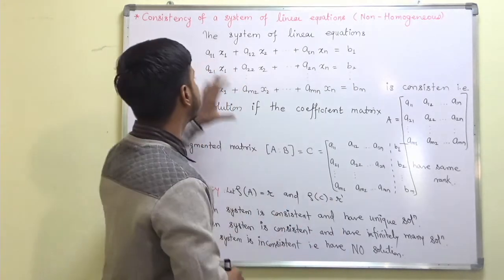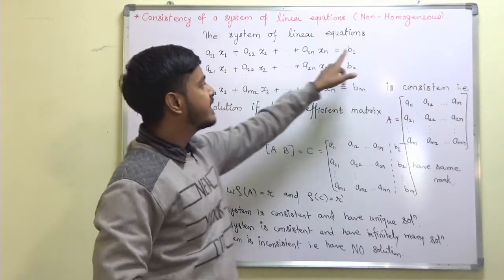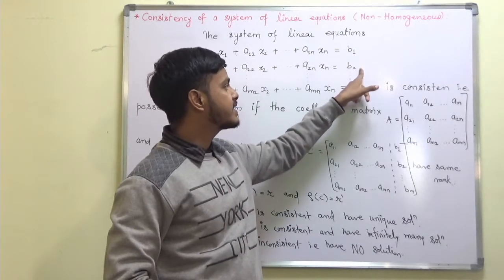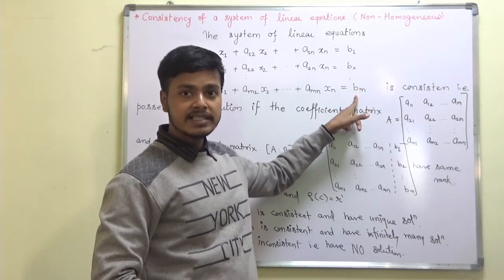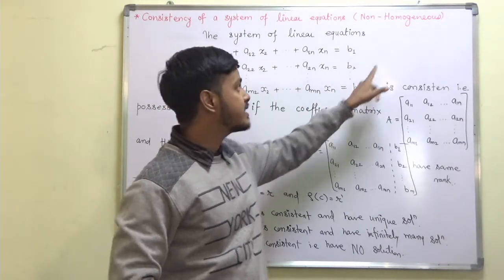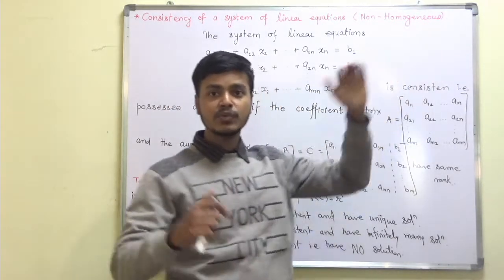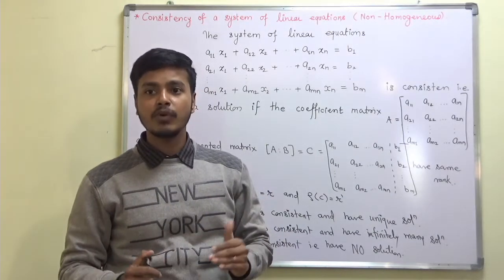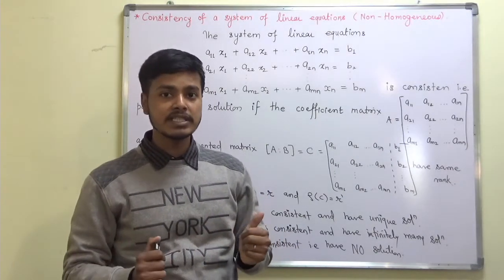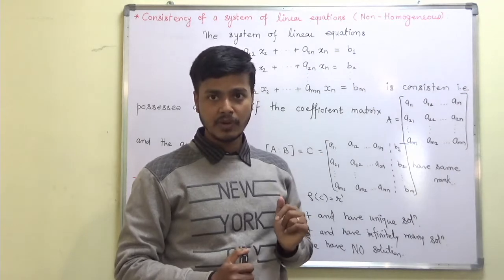If a system is given to you and the right-hand side is having some values, then the system is called a non-homogeneous system. That is what we are going to discuss. And for a homogeneous system, the right-hand side is equal to zero.